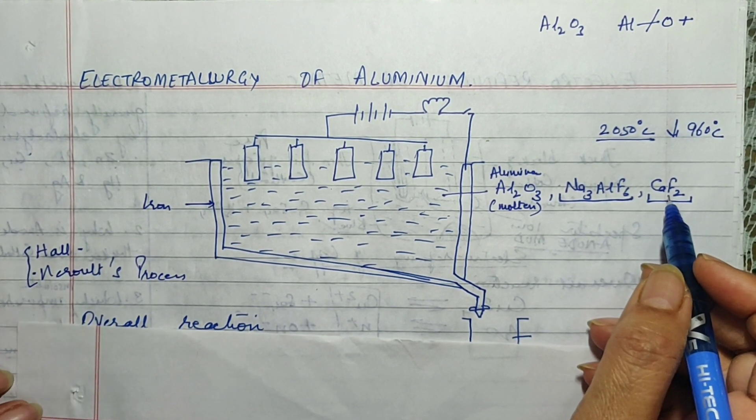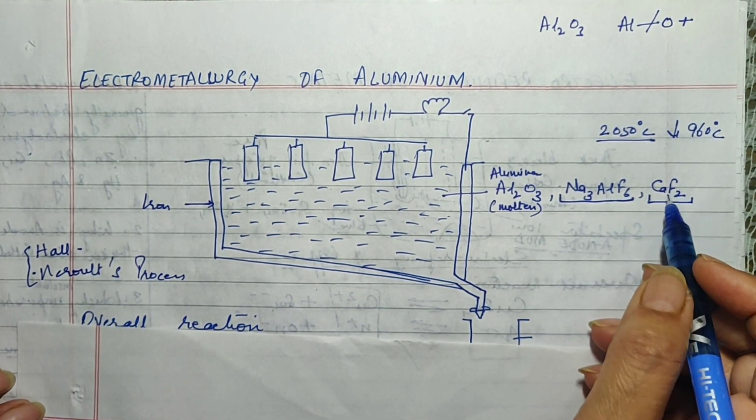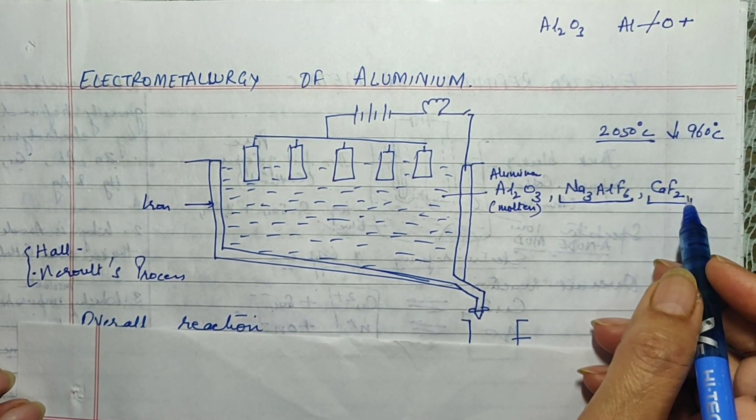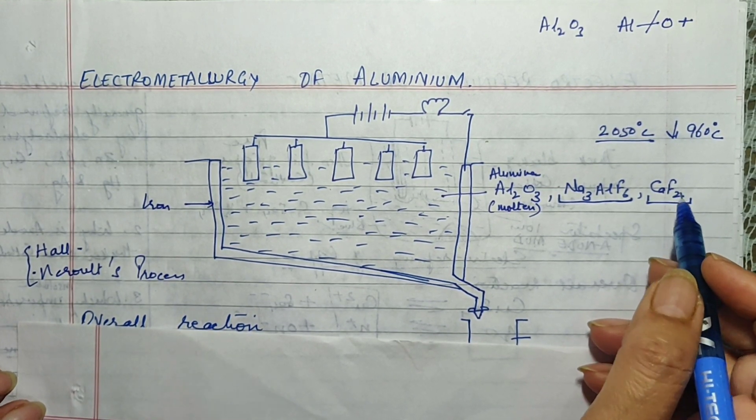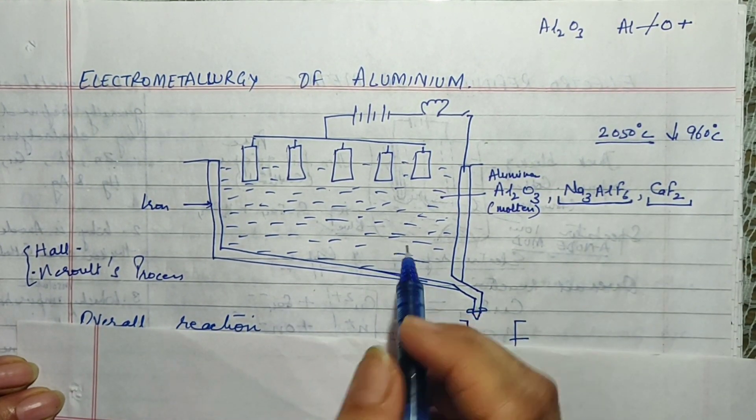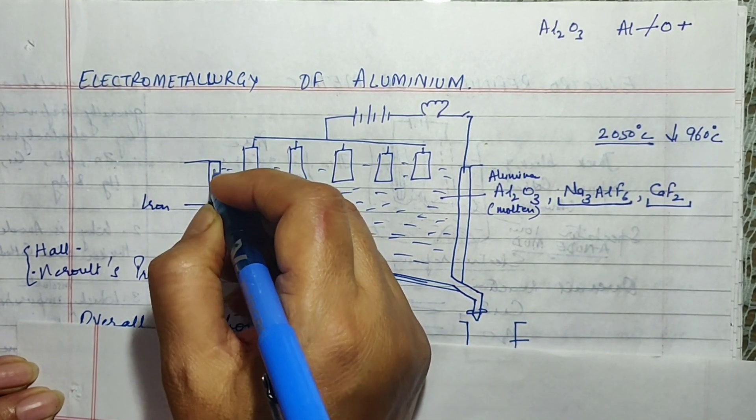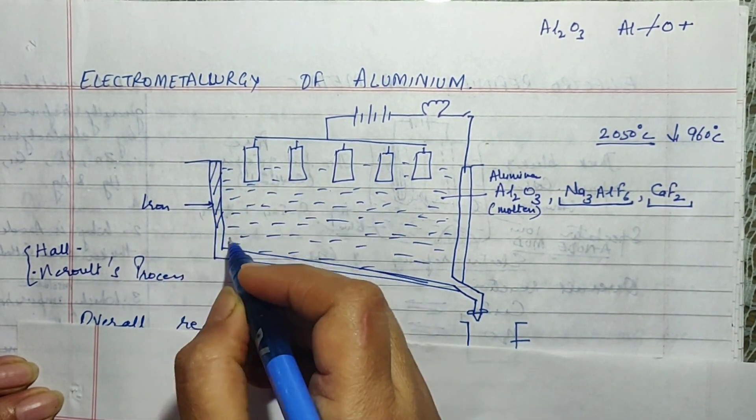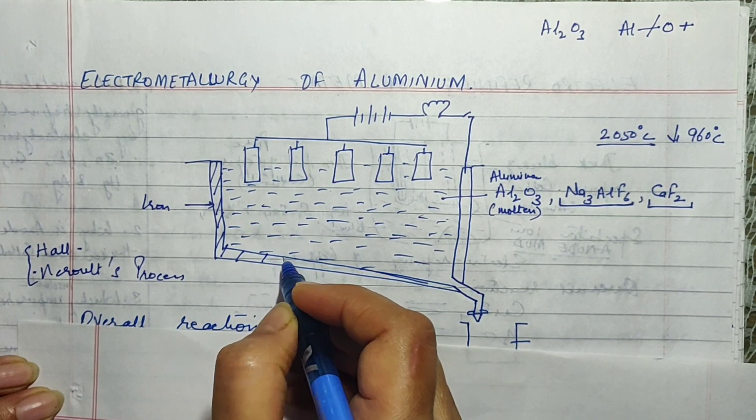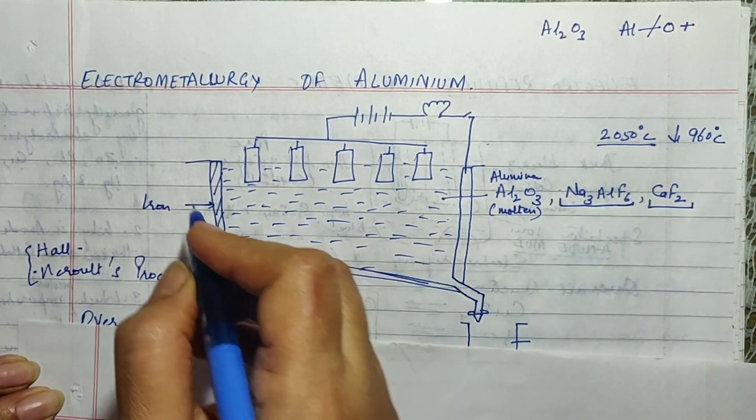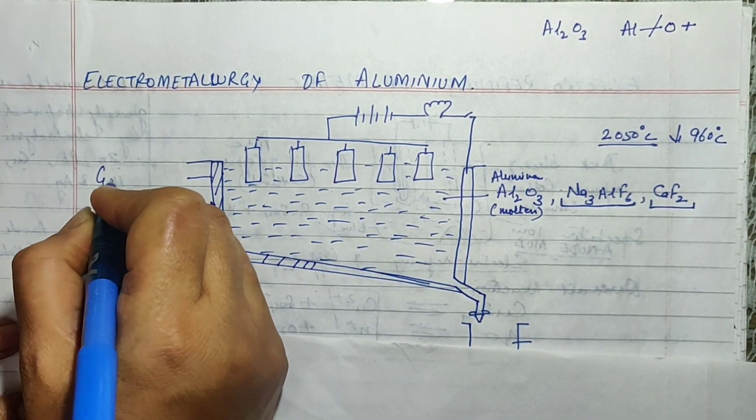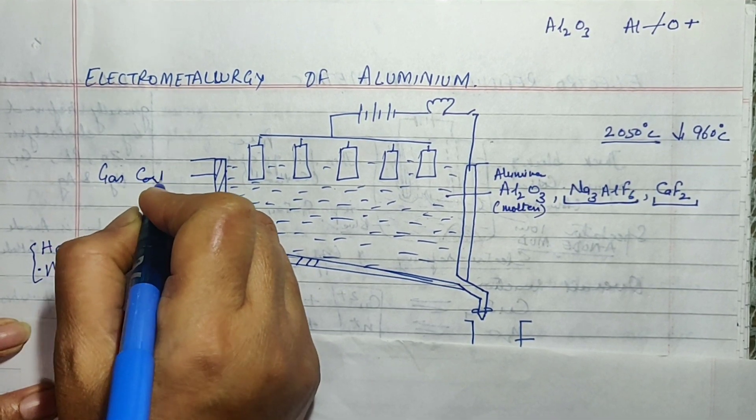So that is the reason of adding fluorospar. In certain books they have written that calcium fluoride is also used to reduce the melting point which is not correct. So it increases the mobility of the ions and it acts as a solvent. Now as you can see the lining of the electrolytic cell is made up of gas carbon. It is made up of gas carbon. I hope you remember what gas carbon is.